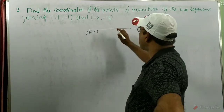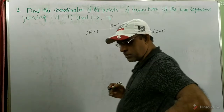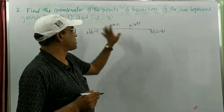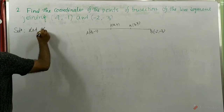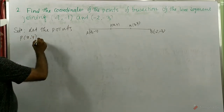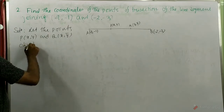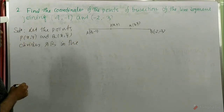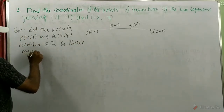And this line segment we divide into 3 equal parts. Trisection means 3 equal parts. So we have to find this point and this point. These 2 points A and B are given. Now we consider this point as P(x, y) and this point as Q(x̄, ȳ). So P and Q divide AB into 3 equal parts.